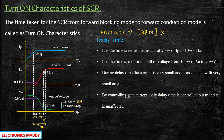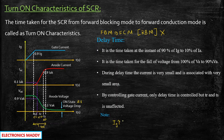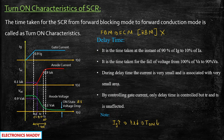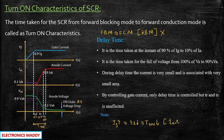By controlling the gate current, only delay time TD is controlled, but TR and TS are unaffected — this is a very important point. If you increase the gate current, TD will be reduced. When TD is reduced, the total turn-on time T_on is reduced since T_on equals TD plus TR plus TS. But TR and TS remain unaffected even if you increase the gate current — remember this.